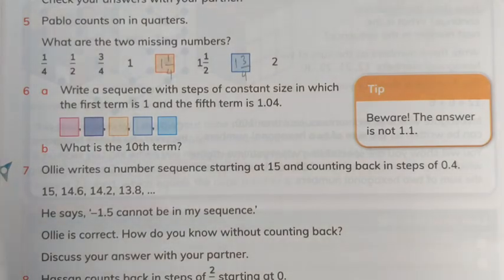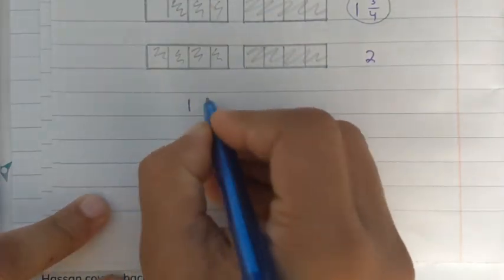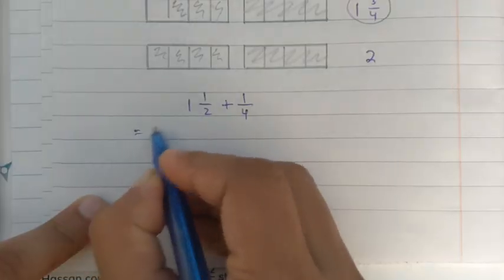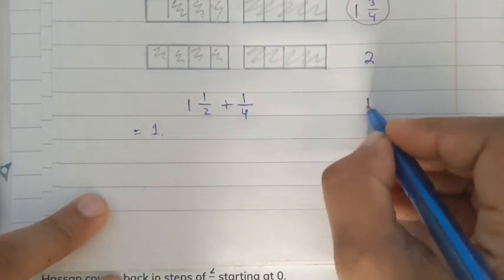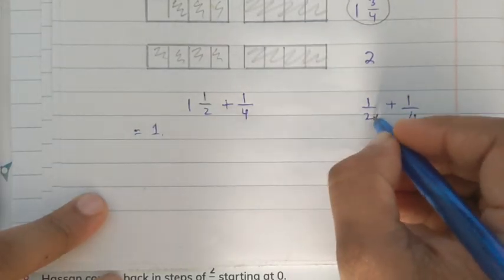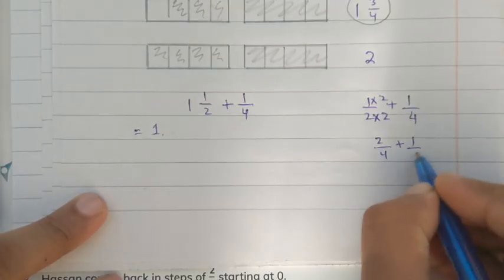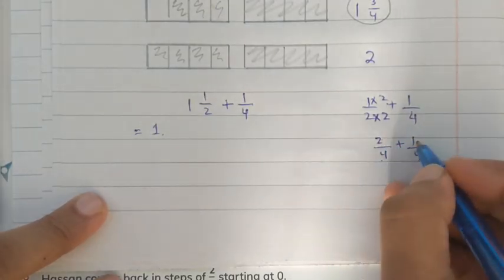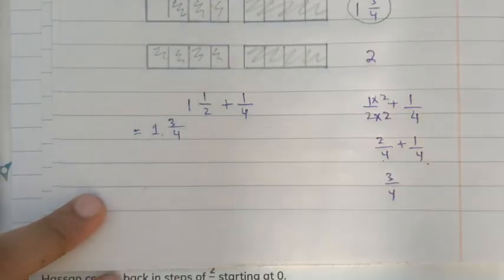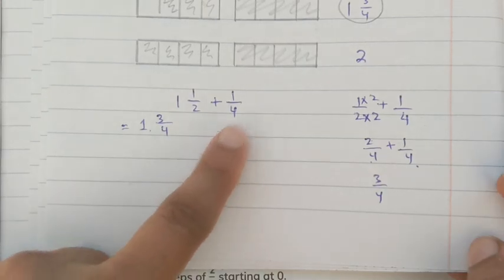Let me show you how to calculate 1 whole 1/2 plus 1/4. We keep the 1 whole separate and add 1/2 with 1/4. To add the fractions, we make the denominators the same: 1/2 becomes 2/4. Then 2/4 plus 1/4 equals 3/4, so the answer is 1 whole 3/4. This confirms the sequence.